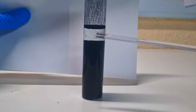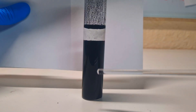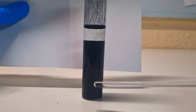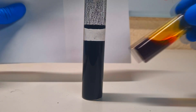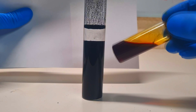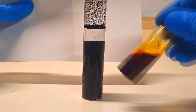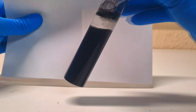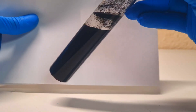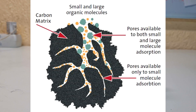And here I get some clear solution, which means that the activated carbon powder absorbs all the iodine. So I get from this red to brownish color to a clear solution. All the iodine was absorbed into the pore structure of activated carbon.